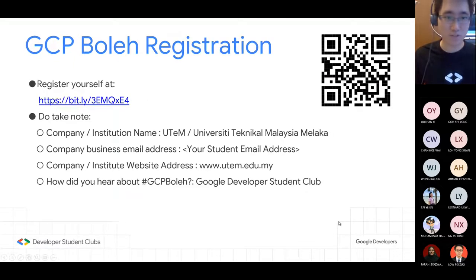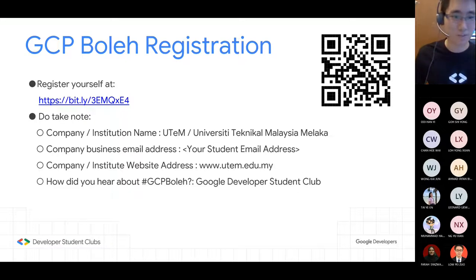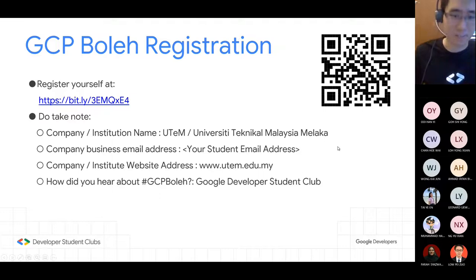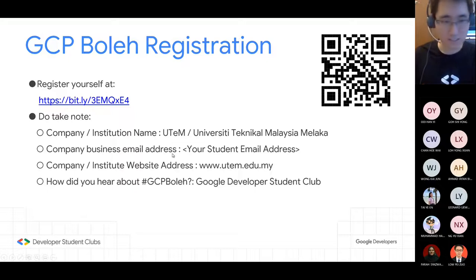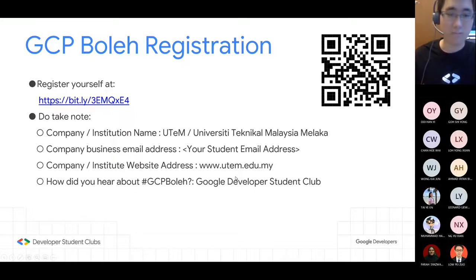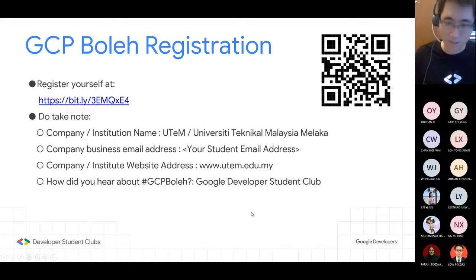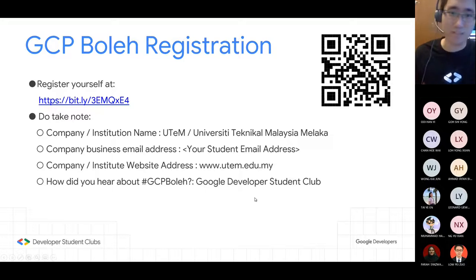For GCP Boleh registration, register yourself at the provided address. The company and institution name is UTEM or University Technical Malaysia Melaka. Your company business email address will be your student email address. Your company or institute website address will be UTEM's website. How you heard about GCP Boleh should be 'Google Developer Student Club', and then select UTEM as your particular GDSC club.